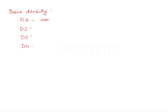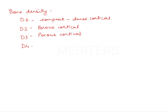D1 is the most compact bone — dense cortical bone. D2 is a porous cortical bone, and so is D3. The difference between D2 and D3 is that D2 has coarse trabeculae and D3 has fine trabeculae. D4 is completely trabecular bone with fine trabeculae.